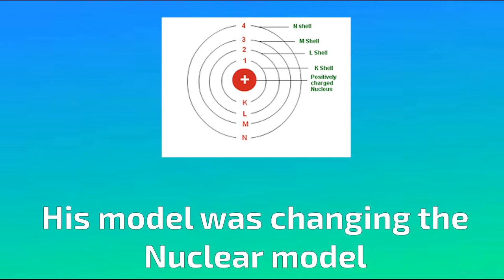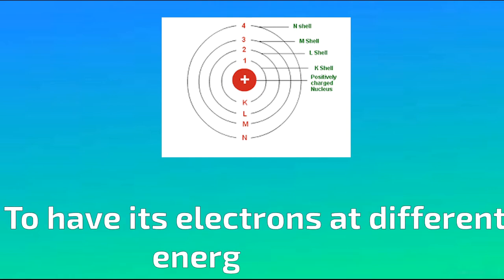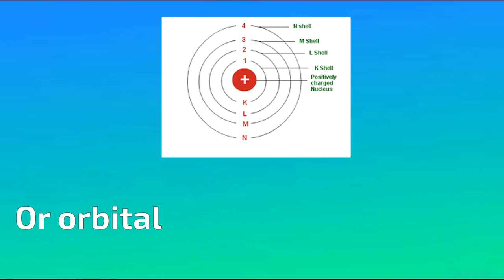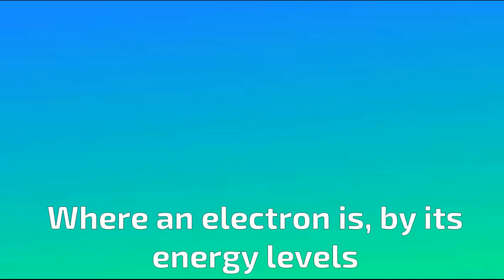His model was changing the nuclear model to have its electrons in different energy levels, or orbitals, around the nucleus. Niels Bohr thought that one could almost predict where an electron is by its energy levels.